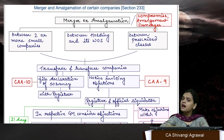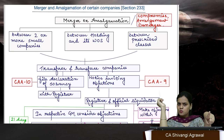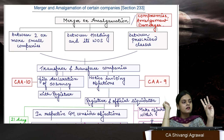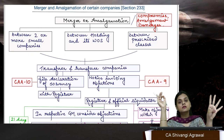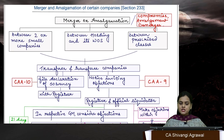Merger and amalgamation of certain companies — also known as fast-track merger — but it is not available for all types of companies. It is available for: small companies, holding company and its 100% subsidiary, prescribed companies which are startups, and a startup with a small company. In these four cases, companies can opt for fast-track merger under section 233 instead of going through that long route.